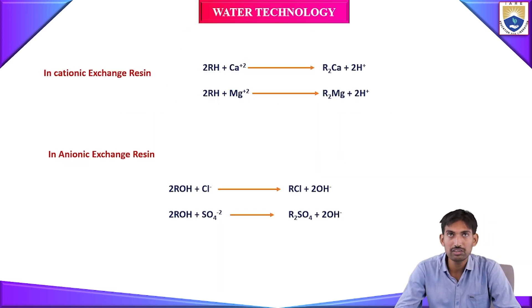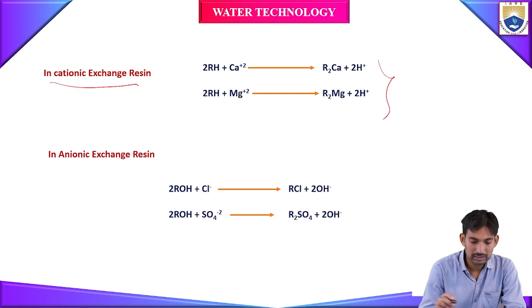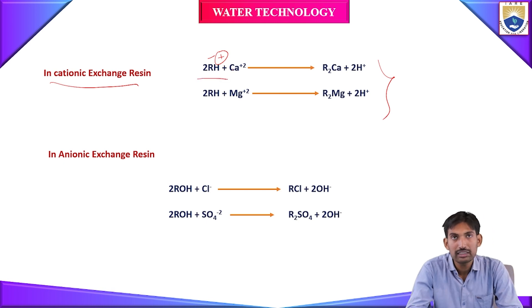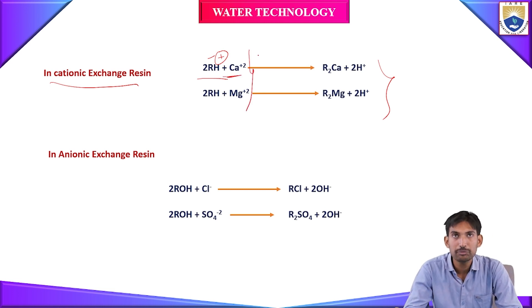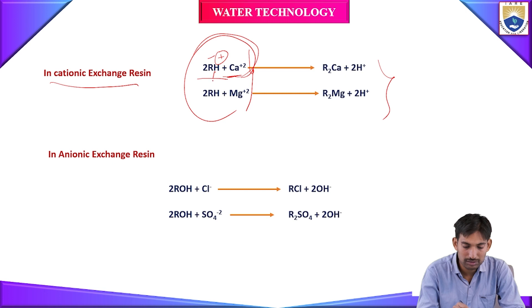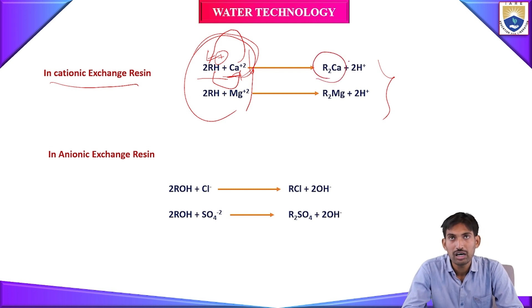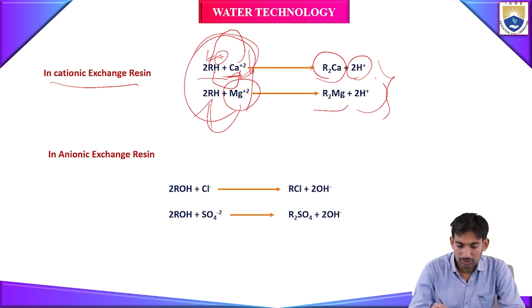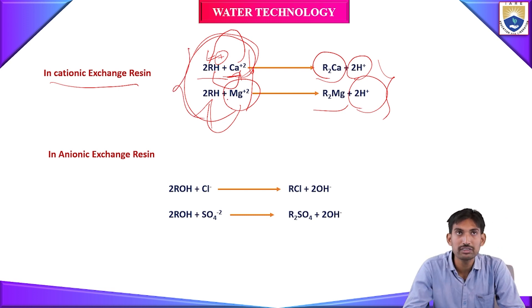These are the reactions involved in the ion exchange process. In the cationic resin (R⁻H⁺), the H⁺ ions are replaceable. When water contains calcium and magnesium salts, Ca²⁺ reacts with 2R⁻ to form R₂Ca and releases 2H⁺ ions. Similarly, Mg²⁺ reacts with the cationic exchange resin to form R₂Mg and releases 2H⁺ ions. These are the chemical reactions involved in cationic exchange resins.